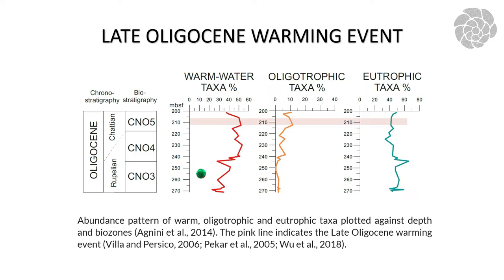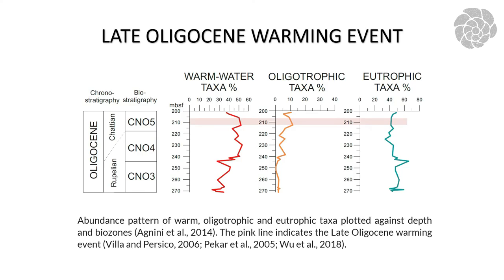In the latest upper part, with lower resolution sampling, we can see again — using the grouping percentages of warm water taxa, oligotrophic taxa, and eutrophic taxa — that the warm water taxa, after the cooling of the early Oligocene, tend to increase slowly up to a peak in the late Oligocene. This trend is also seen in the Southern Ocean by oxygen isotope records from Pechero et al. 2004 and in another area by Wu et al. 2018.